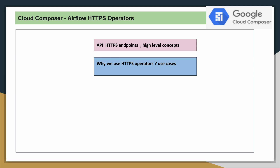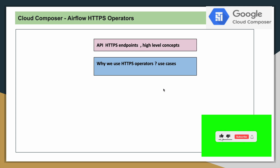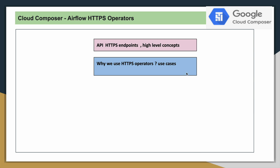In your data engineering use case, if you have HTTP servers acting as a source, that means you will have to extract the data from HTTP servers, apply transformations, and then write the data into target systems. There are many ways to do it, and Airflow's HTTP operator is one such option available for us to extract data from HTTP endpoints.